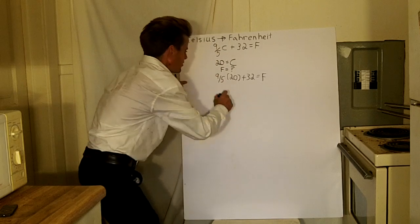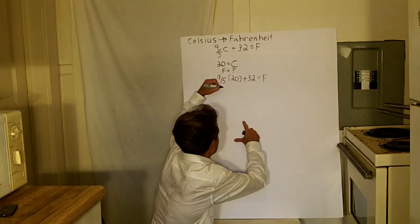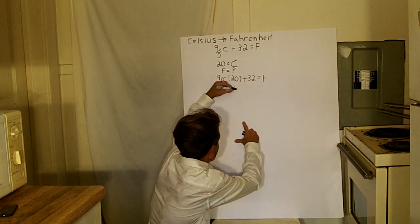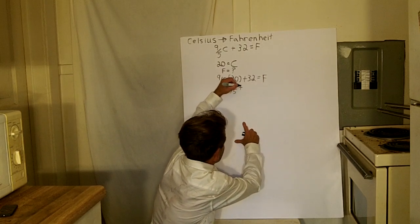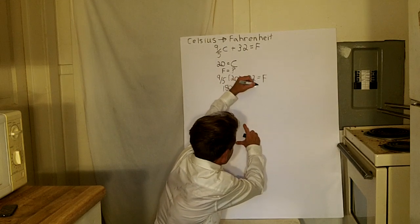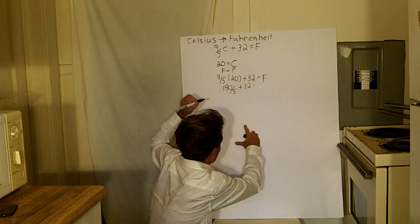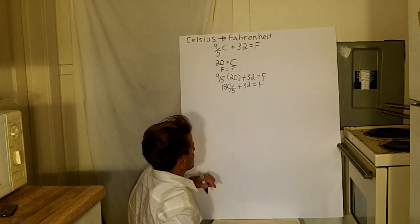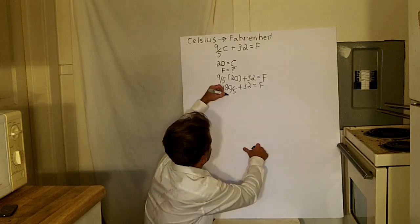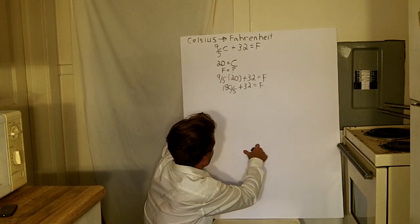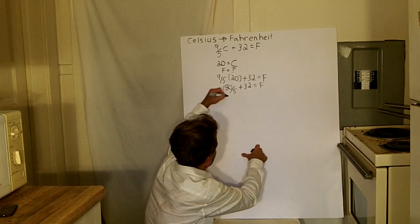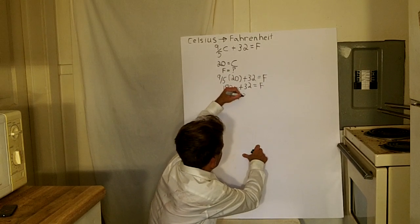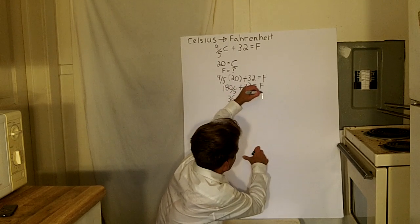So 20 times 9 is 180, divided by 5, plus 32 equals F. 180 divided by 5 is 36. So 36 plus 32 equals F, or Fahrenheit — which gives us 68 degrees Fahrenheit.